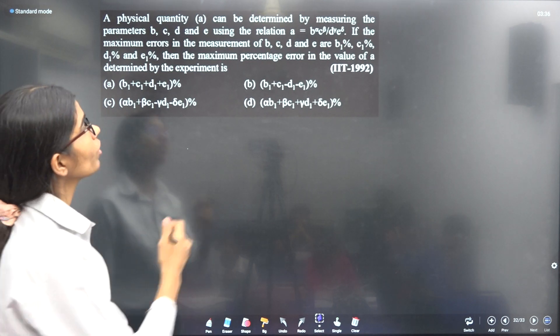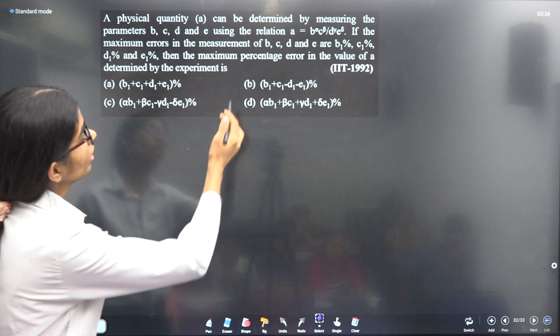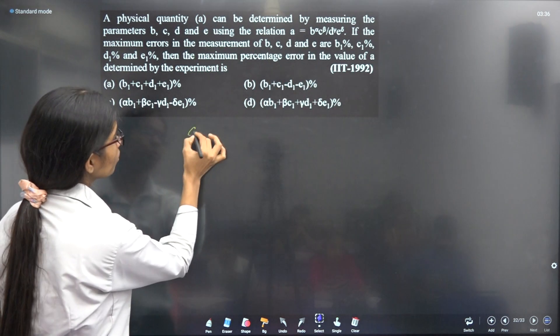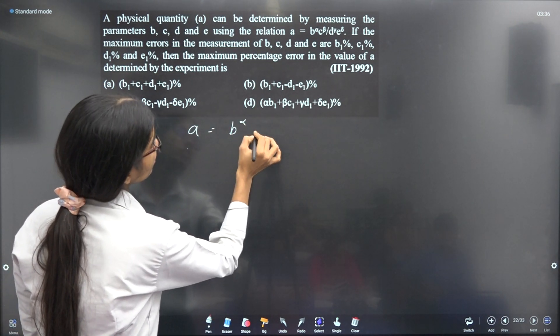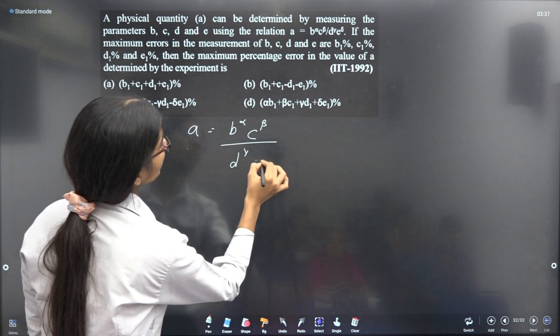In this question, a physical quantity A is determined by the measurement of parameters B, C, D, and E using the relation A = B^α C^β / (D^γ E^ρ).